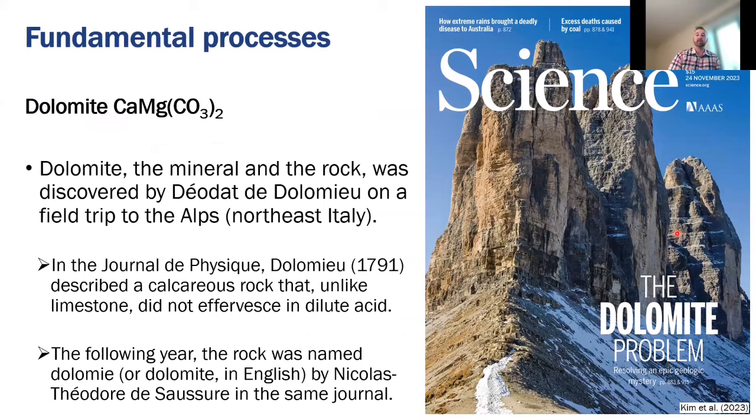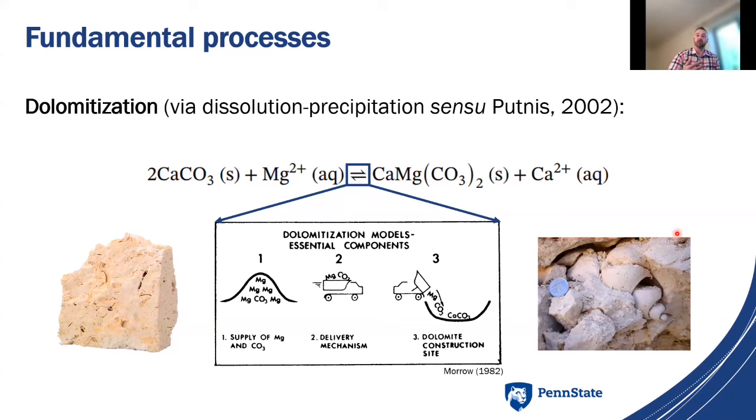Fundamentally, dolomite can form in three different ways. The first mechanism is called dolomitization. Dolomitization is defined as a replacement reaction, which occurs via dissolution precipitation. What that means is we dissolve out two moles of calcium carbonate, so calcite or aragonite, in some magical water that has magnesium in it. Much of the carbonate is conserved in the construction of dolomite, and then one mole of calcium is liberated from the reactant into the solution. The second mechanism to form dolomite is through cementation, which occurs via the direct precipitation from a fluid or an aqueous solution.